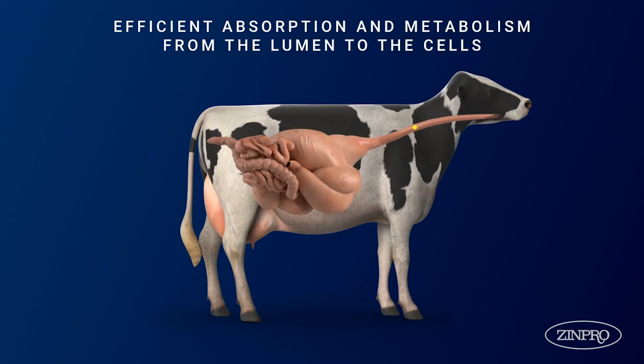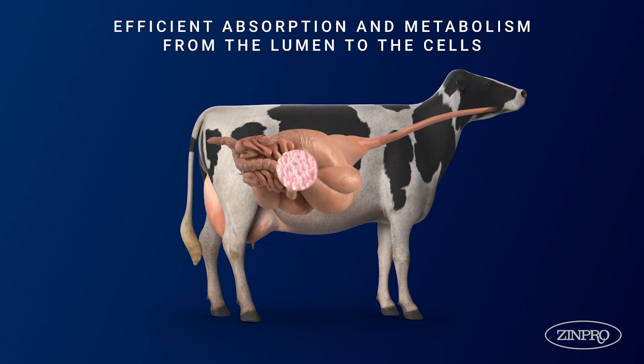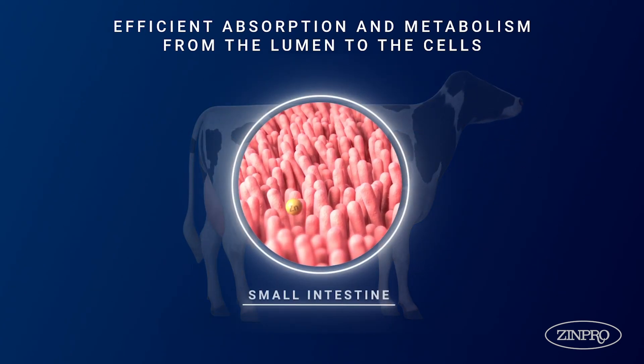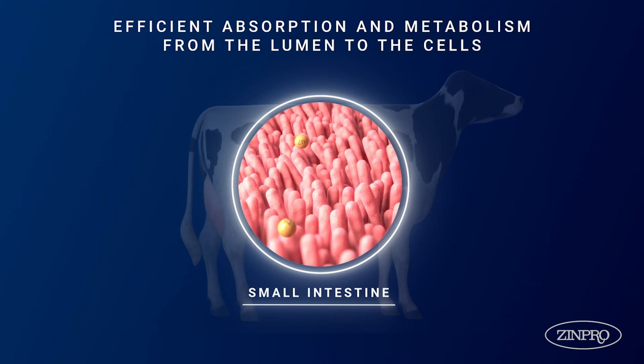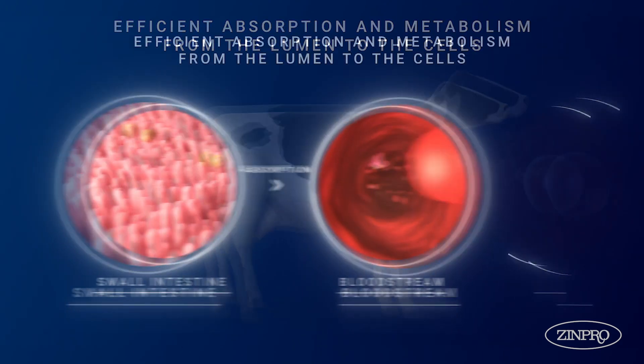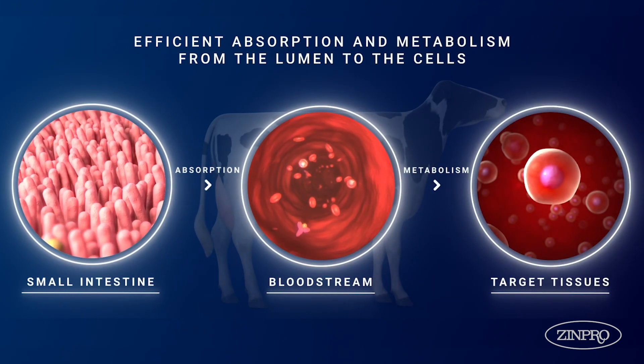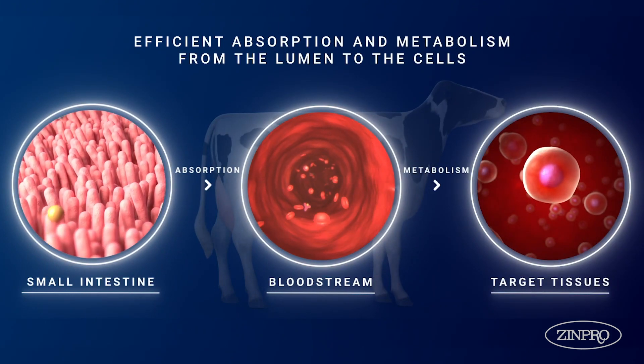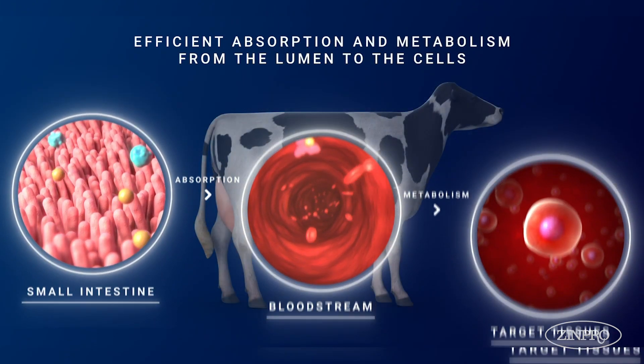Zinpro performance minerals are metabolized differently. We have many studies showing that their urinary excretion — which means it is post-absorption, having passed through circulation to reach the kidneys — is at a much slower rate than other forms of minerals. So we are available in circulation longer to be delivered to the cells and tissues that need these minerals.